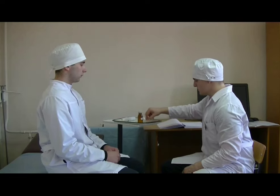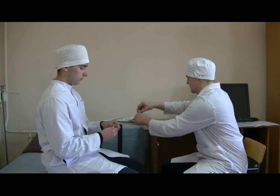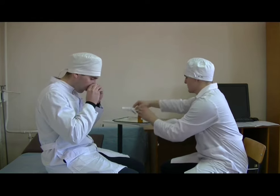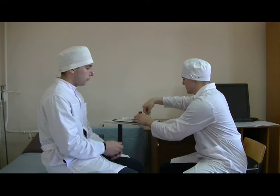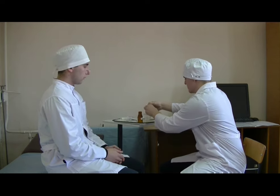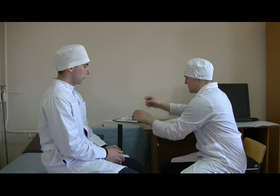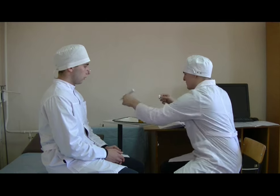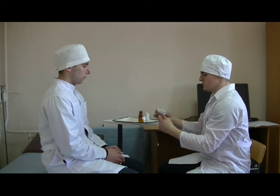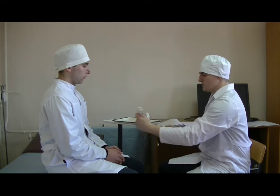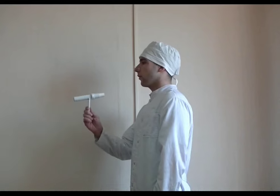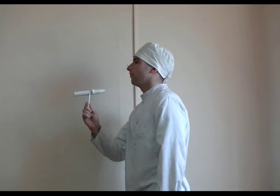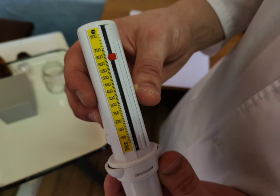Before performing the peak flowmetry, conduct the measurement in a standing position. Disinfect the peak flow meter, put on a nose clip, and take a maximum breath. Hold the device horizontally, take a deep maximum breath, and make three consecutive maximum exhalations through the mouth.